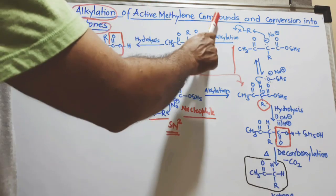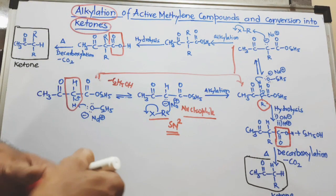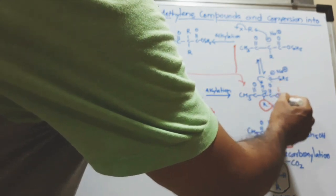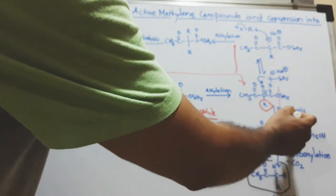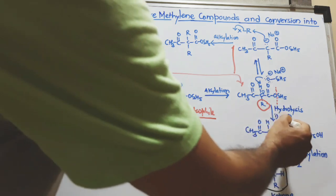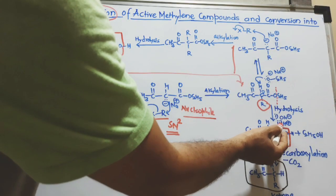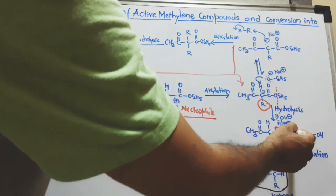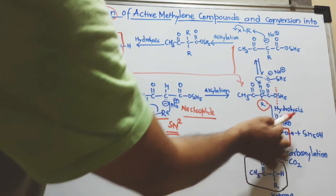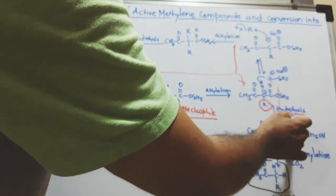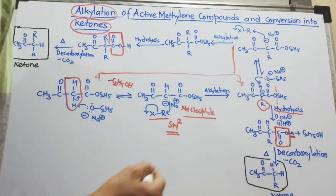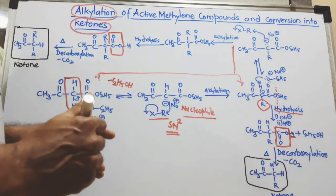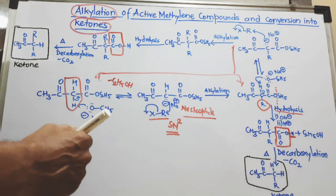Now I will show how the active methylene compound is converted into a ketone. First, you have to hydrolyze the ester — hydrolysis means breaking this bond using water in the presence of alkali or base, giving a salt. Then in the second step, you add acid to acidify the product. The ester is converted into a carboxylic acid — that is why I have shown OH in the first step and H⁺ in the second step. Once the acid is formed, you perform one more step.